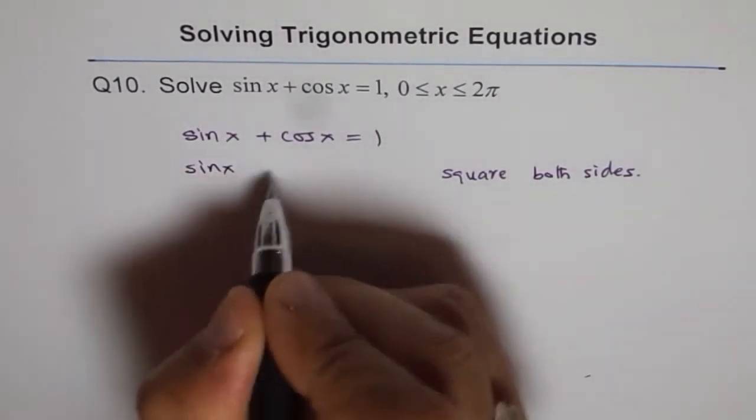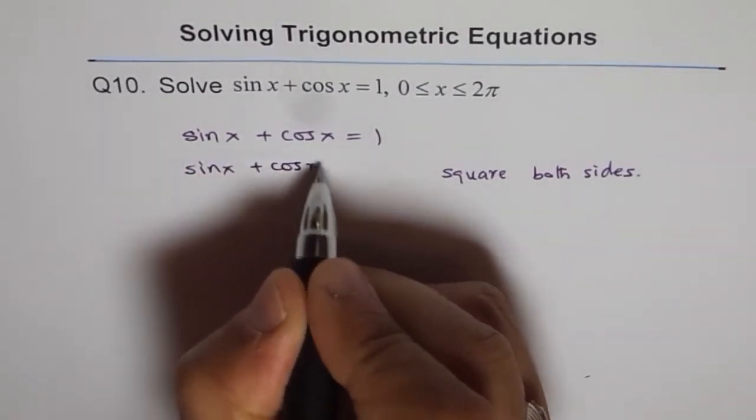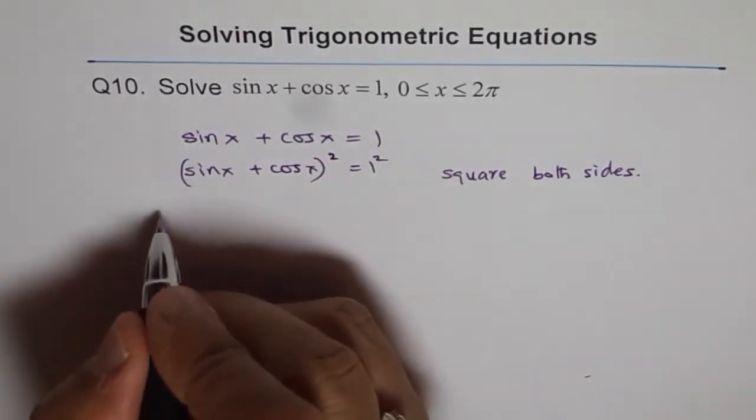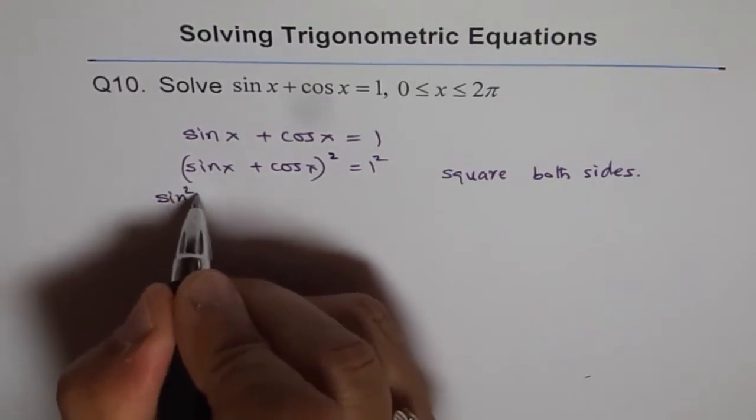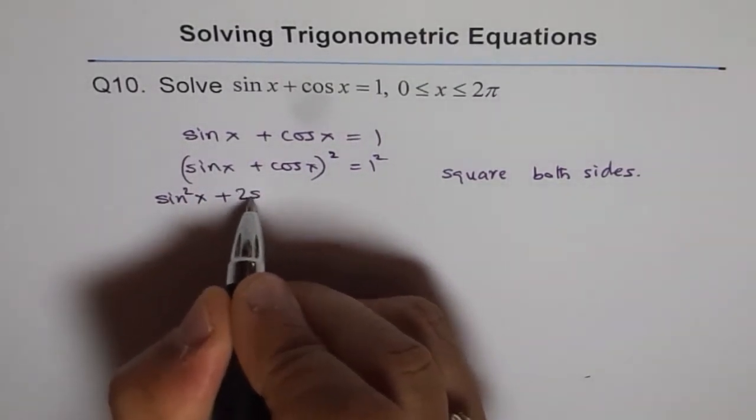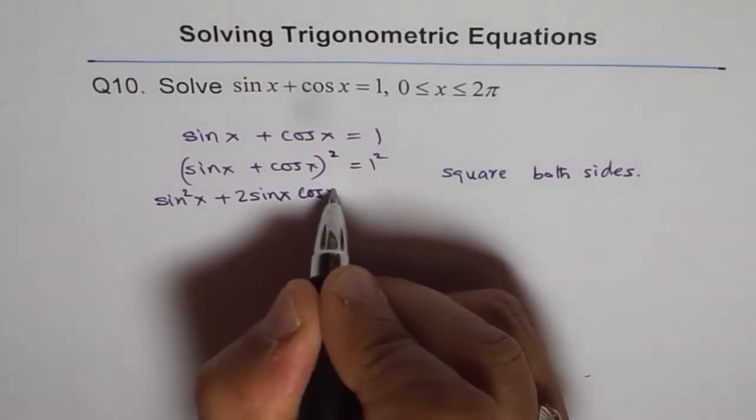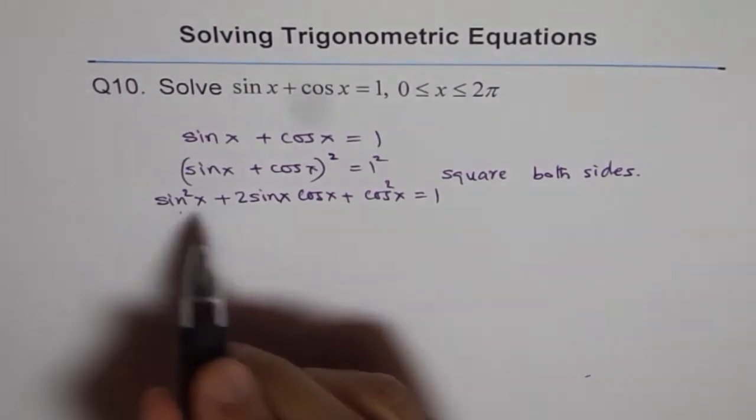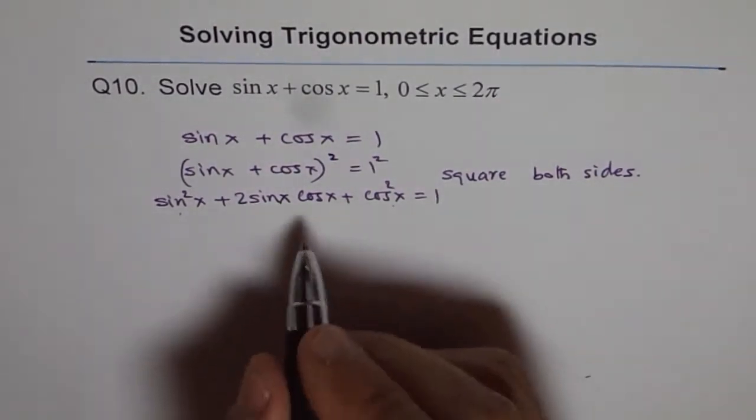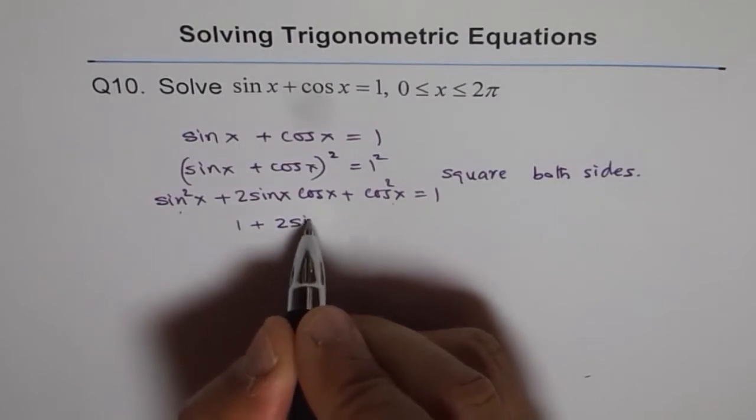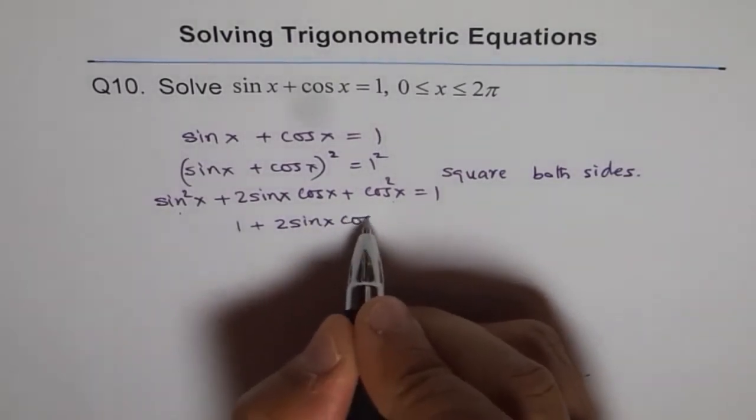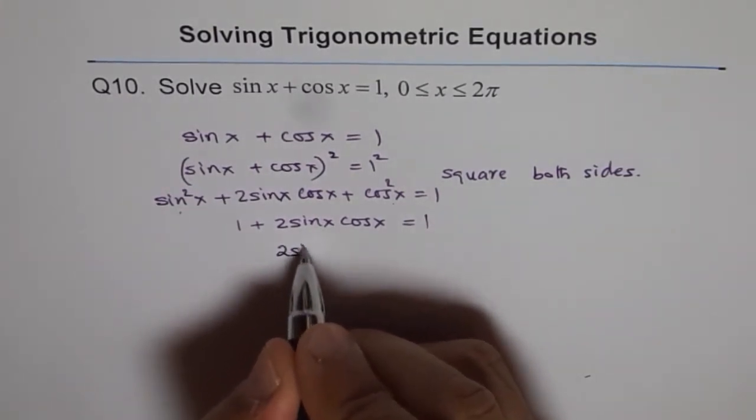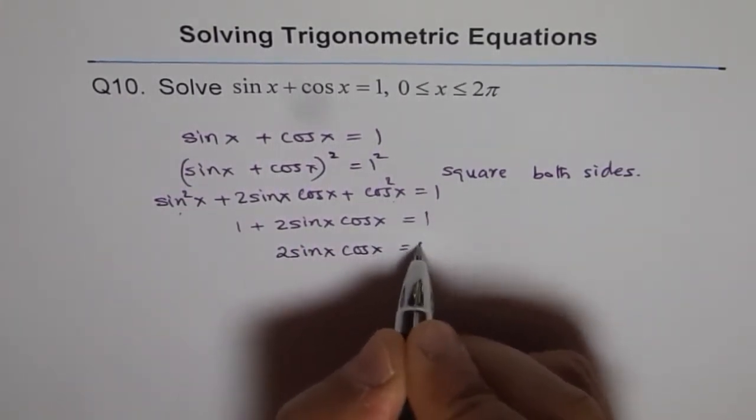Let's square both sides. We get sin x plus cos x whole square equals 1 square. When I square it, I get sin²x plus 2sinx cosx plus cos²x equals 1. Now, you know sin²x plus cos²x is 1. So you get 1 plus 2sinx cosx equals 1. And that leads to 2sinx cosx equals 0.